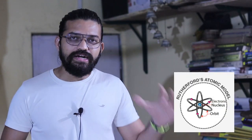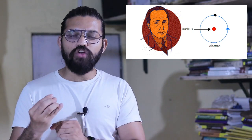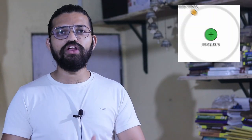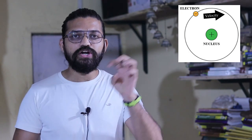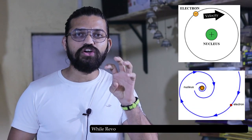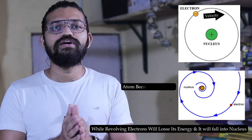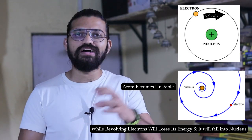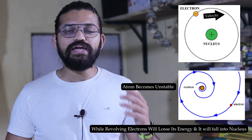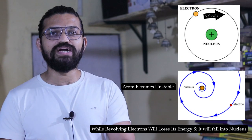But this particular model contains some flaws. Ernest Rutherford says that electrons are continuously revolving around the nucleus. When an electron continuously revolves around the nucleus, it will be having some kind of energy and velocity. But after a certain time period, while revolving, the electron will lose energy and collide into the nucleus. Due to this collision, the atom becomes unstable. But in our general practice, have you ever seen an atom which is unstable? Atoms are electrically neutral and more stable. So this particular prediction by Ernest Rutherford becomes false.